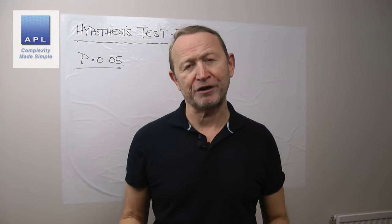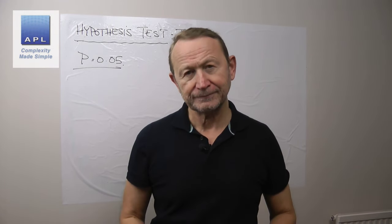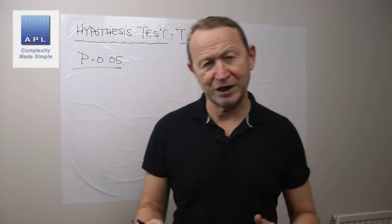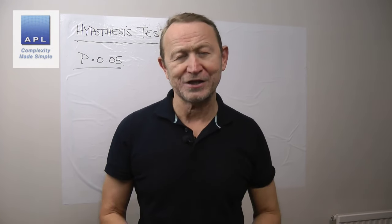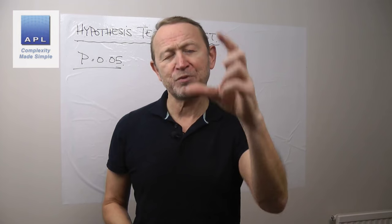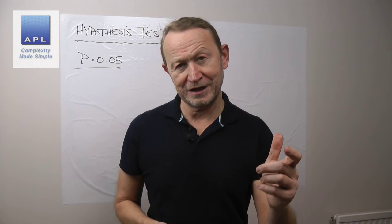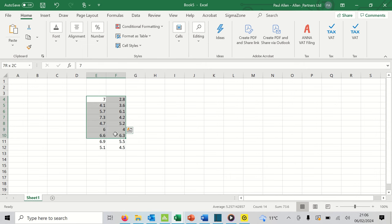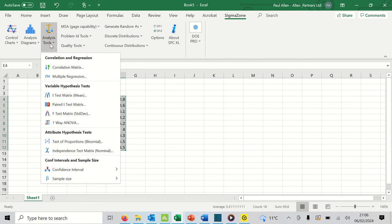We're going to put that data into an Excel spreadsheet. I'm using SPCXL in this case. I've put the two groups into the spreadsheet, I'll highlight the data, go to the menu on SPCXL, and under Statistical Tools > Analytical Tools, drop that down and it says 't-test: a shift in the mean.'